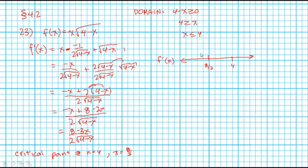When we are smaller than 8 thirds, there's a positive slope, because values like 0 are going to give positive values, and the denominator is always positive.